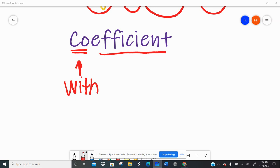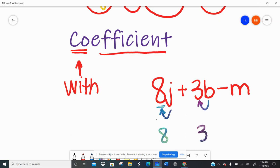So when I have a variable, an unknown number that we represent with a letter, if I have that 8j plus 3b minus m, each of those have coefficients, right? For every variable, for every letter, you have to have a coefficient. So I look to the number next door. 8 is the coefficient here. 3 is the coefficient here. Uh-oh, but I don't have anything next to the m.